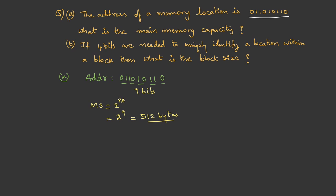In the second part, if 4 bits are needed to uniquely identify a location within a block, then what is the block size? So they have given the block offset as 4 bits. And we know that block size is 2 power block offset. Therefore, this is 2 power 4, that is 16 bytes.